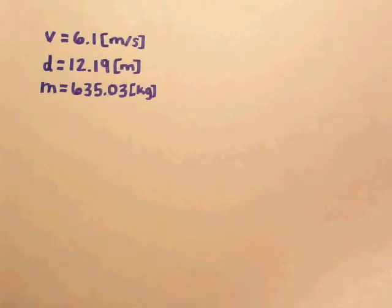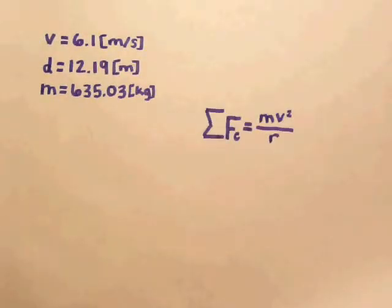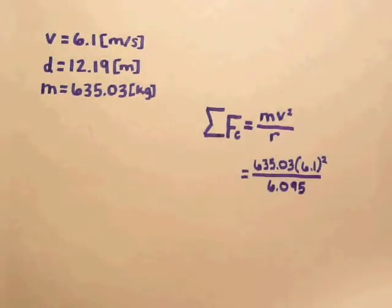To do this, we will use the centripetal force and centripetal acceleration equations. Therefore, the net centripetal force acting on the horse and rider is 3876.86 newtons.